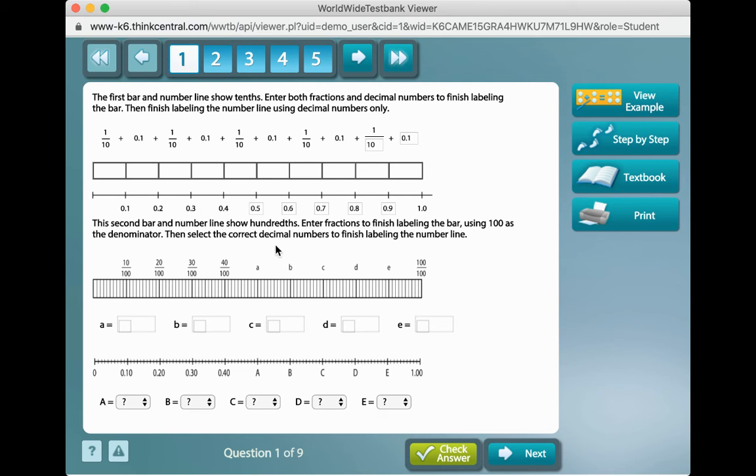Then you're going to select the correct decimal numbers to finish labeling the number line. So, here it says A equals. Well, here is A.